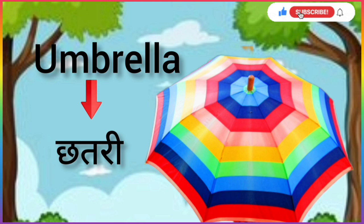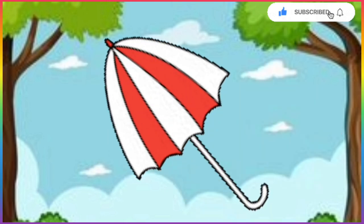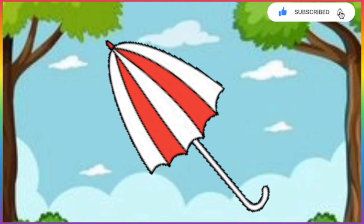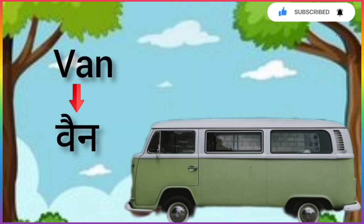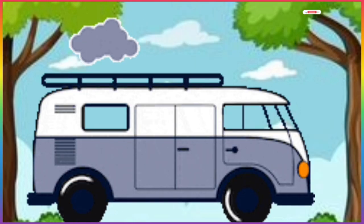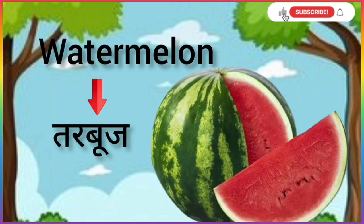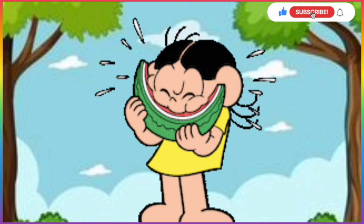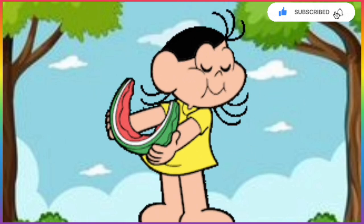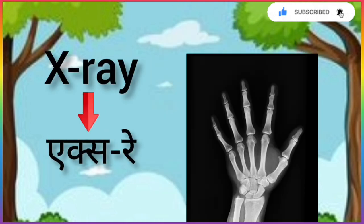U for Umbrella, Umbrella means Chattery. V for Violin, Violin means Band. W for Watermelon, Watermelon means Tarbuj. X for X-ray.